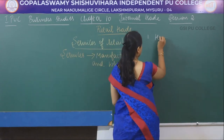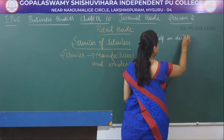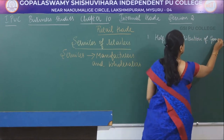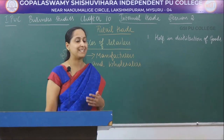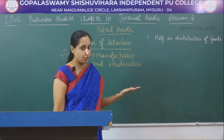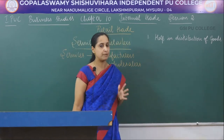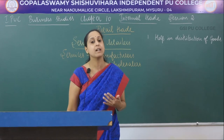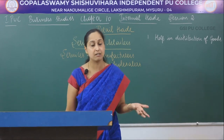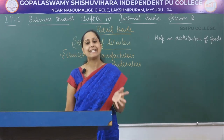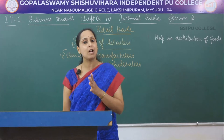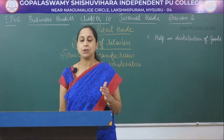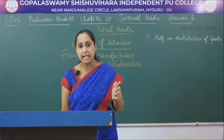The first service provided by retailers to manufacturers and wholesalers is help in distribution of goods. The main job of retailers is to sell goods and services to ultimate customers. Products manufactured by the manufacturer are purchased by the wholesaler, who sells to retailers, who then sell to ultimate customers, making the product available across a large geographical area.